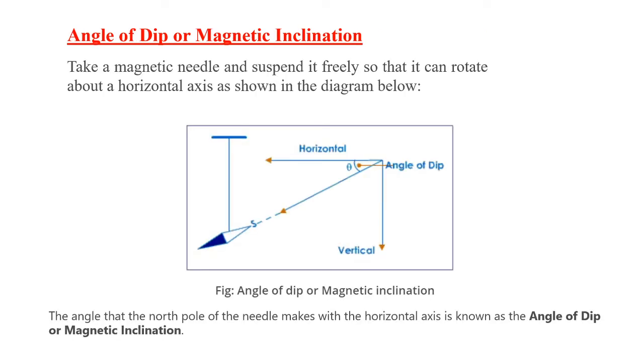Angle of dip or magnetic inclination. Take a magnetic needle and suspend it freely so that it can rotate about a horizontal axis as shown in the figure. The angle that the north pole of the needle makes with the horizontal axis is known as angle of dip or magnetic inclination. This is the horizontal axis, this is the vertical axis. This angle is the angle of dip.